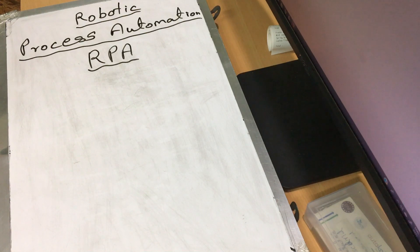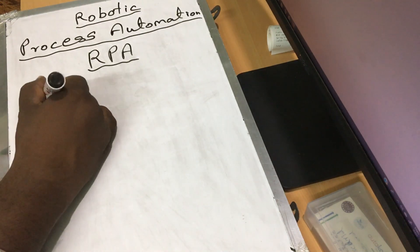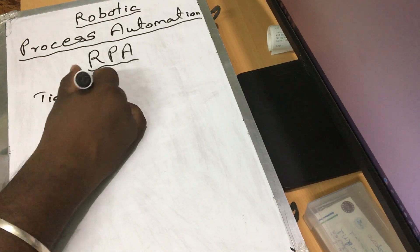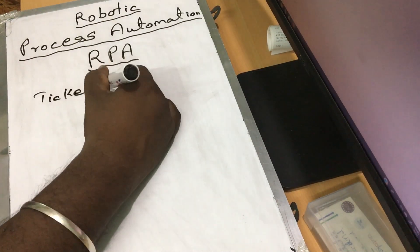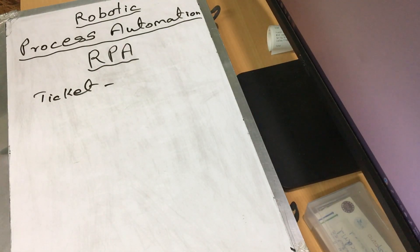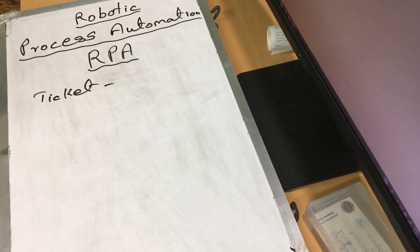For example, take a ticket. In a Railway Station, you can take a ticketing mission. You can go to the counter and take a ticket. If you want to take a ticket at the counter, you can take a ticket. This does not require manpower.